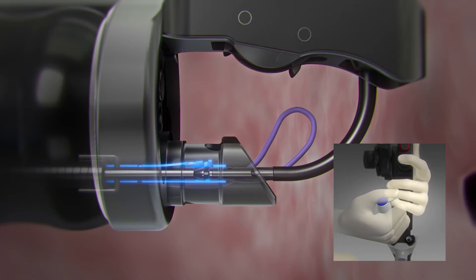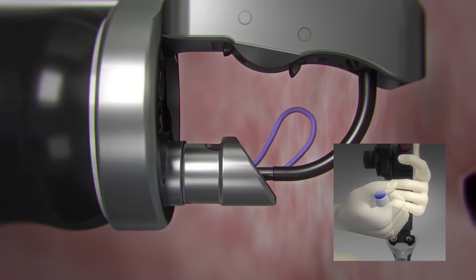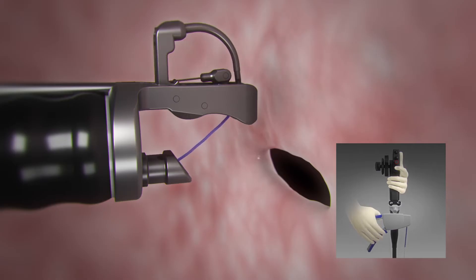Press the blue button on the anchor exchange catheter and pull back approximately one centimeter to disengage from the anchor exchange catheter. Open the needle driver handle.